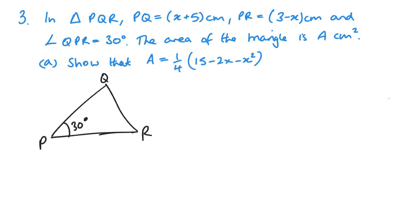And then PQ is X plus 5, and PR is 3 minus X. And we need to show this. So area is a half. Now let's label this: little P, little R, and little Q. So we're looking at RQ sine P.